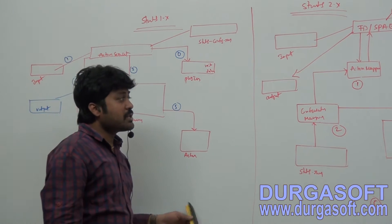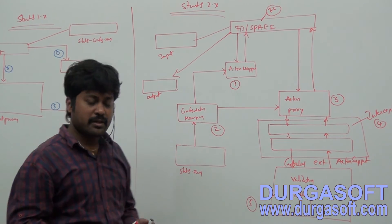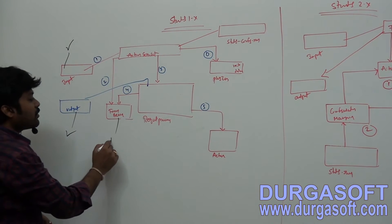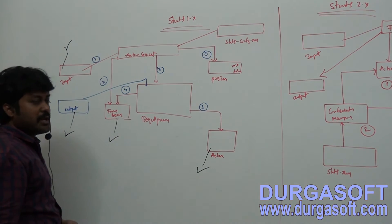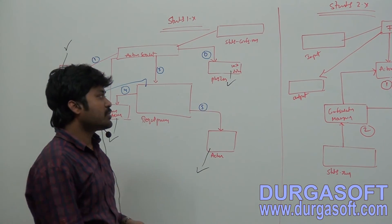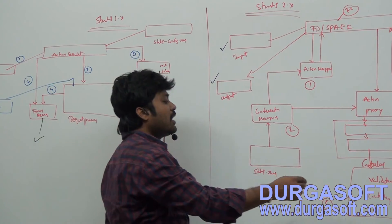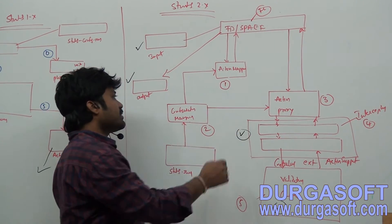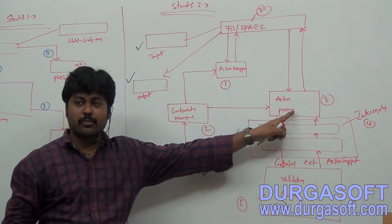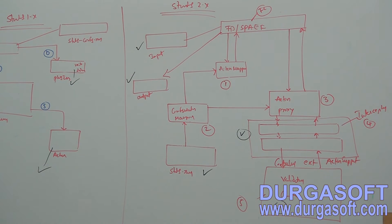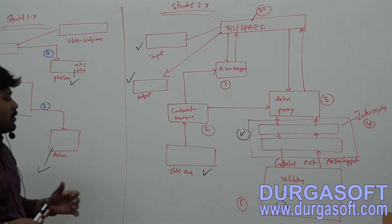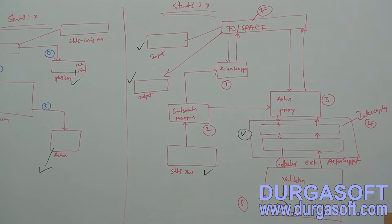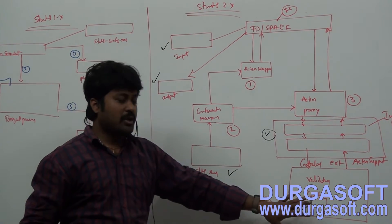This is the difference between the two architectures. In Struts 1x, the developer needs to create input pages, output pages, form bean classes, action classes, and plugin classes. Coming to Struts 2x, you need input pages, output pages, configure data in struts.xml, and write only one single controller class. Configuration manager, ActionMapper, and ActionProxy are internal components you don't need to write.